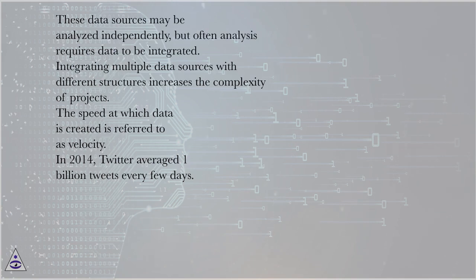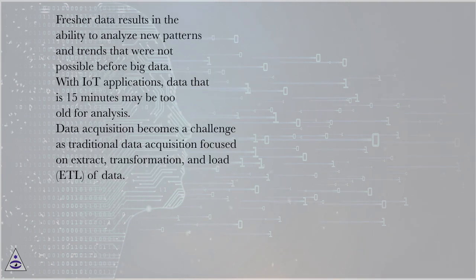The speed at which data is created is referred to as velocity. In 2014, Twitter averaged 1 billion tweets every few days. Fresher data results in the ability to analyze new patterns and trends that were not possible before big data. With IoT applications, data that is 15 minutes old may be too old for analysis.